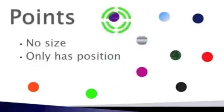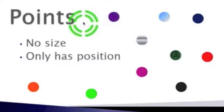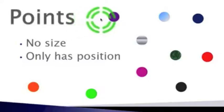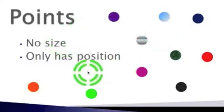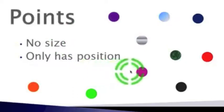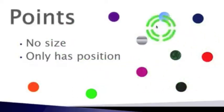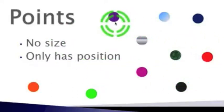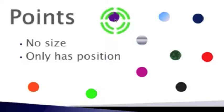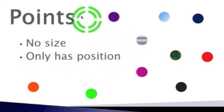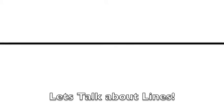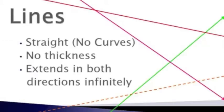The first type of geometry we are going to discuss is points. It is important to note that points have no size and they only show position. These here are some examples of points, and you've seen points on graphs in your other math classes where they show position.